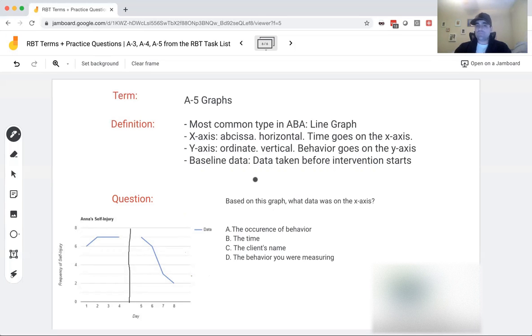Baseline data, data taken before intervention starts. We want to see what the client can and can't do before we start working on it. Maybe we don't need to work on it. Maybe your client has it down. Or maybe we want to decrease the behavior, and we want to see where the behavior is at before we get intervention. Where is baseline in this graph? Baseline is right here. This line separates our baseline data from our intervention data. This data was taken before intervention starts, and then you can see when intervention started, the behavior decreased.